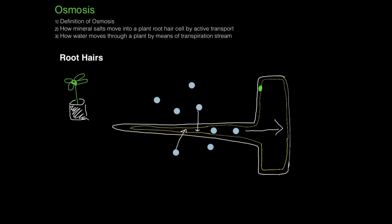Each branch of a root will be covered in millions of these microscopic hairs. These dots here are water molecules, which the hairs absorb through osmosis.